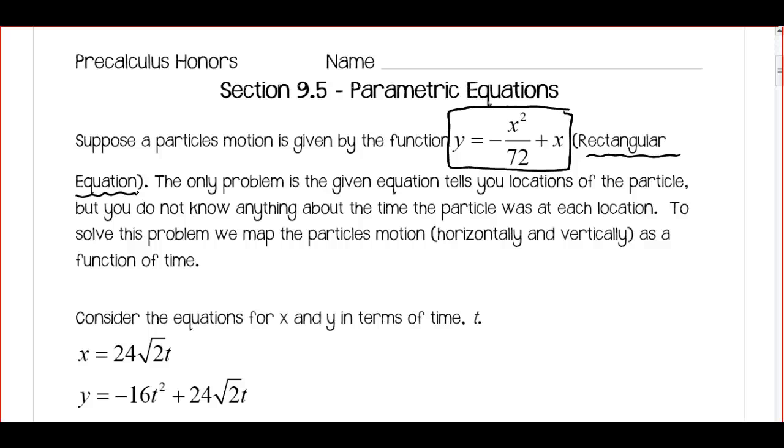But we don't know anything about the time the particle was at each location. So if we know an x value we can find a y value, but again it doesn't really tell us about the time that the particle was at each location. So what we do here is we map the particle motion, we map the horizontal motion, and we map the vertical motion as a function of time.